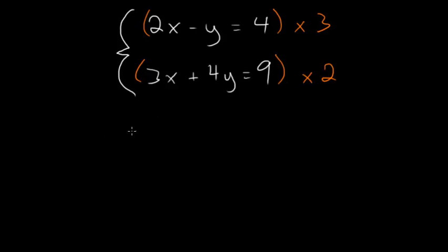The first equation becomes 6x minus 3y is equal to 12, and the second equation becomes 6x plus 8y is equal to 18.